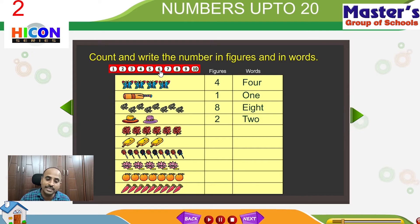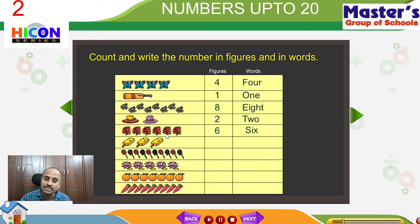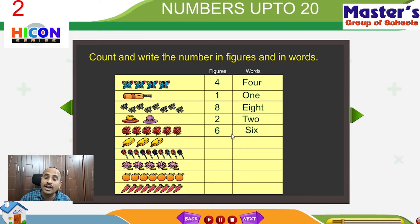We can represent the roses with the number 6. And in words, the 6 can be written like this: S, I, X — six.